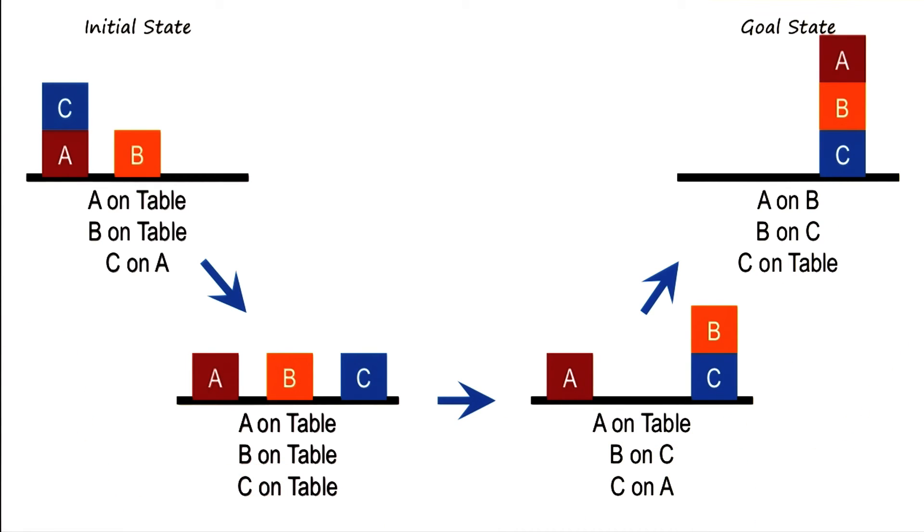The question then becomes, how does an AI method know what operation to select in a given state? Consider this state, for example. There are several operations possible here. One could put C on top of B, or B on top of A. How does the AI agent know which operation to select at this particular state?